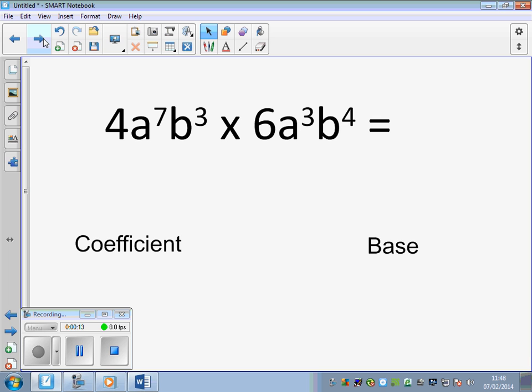What we mean is we're going to be multiplying terms with both letters and numbers and indices. A little bit of language: the number 4 here is referred to as a coefficient because the coefficient is the number in front of the letters.